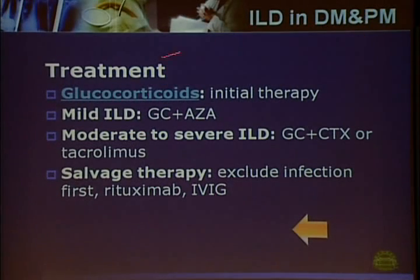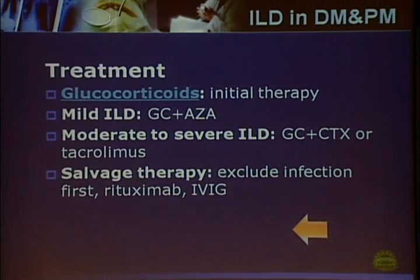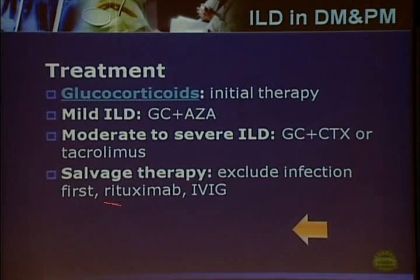For treatment of ILD in myositis patients, corticosteroids are the first-line initial therapy. For mild ILD, azathioprine is used together with corticosteroids. For severe ILD, cyclophosphamide is used, and sometimes tacrolimus is used for patients with severe ILD. For patients refractory to the above treatment, if infection can be excluded, rituximab and large-dose intravenous immunoglobulin can be used as salvage treatment.